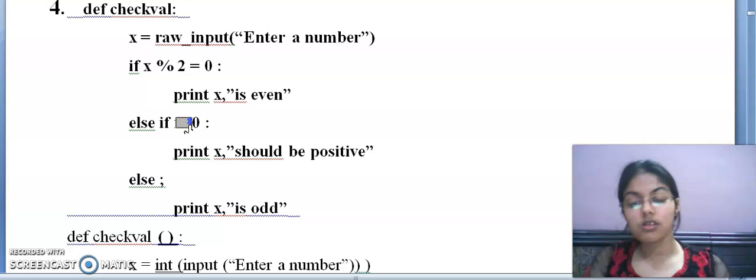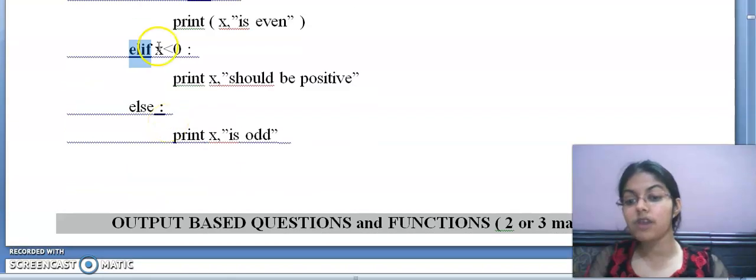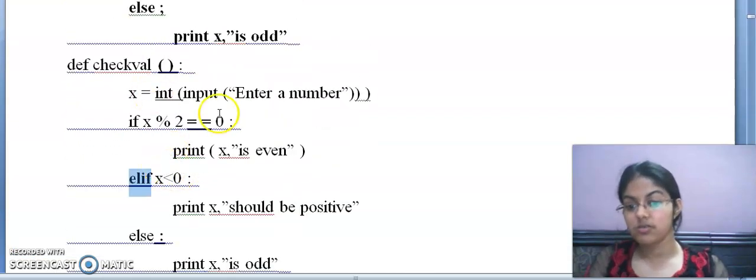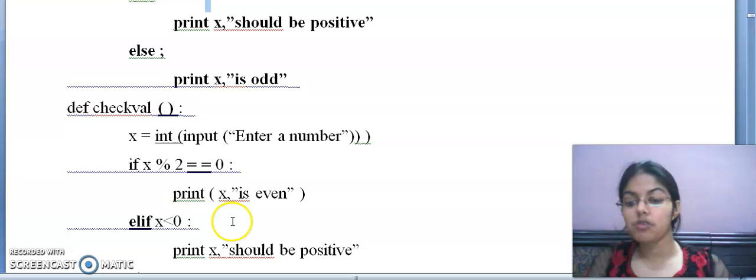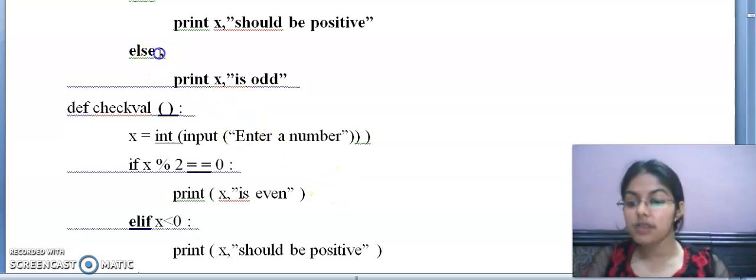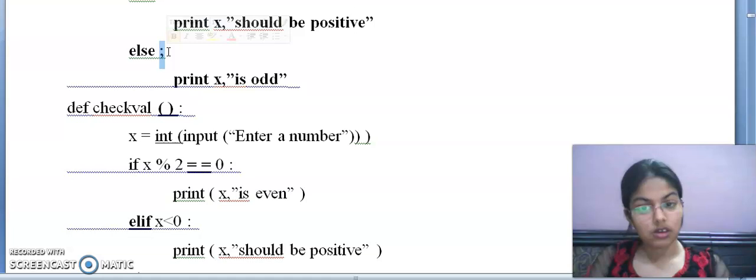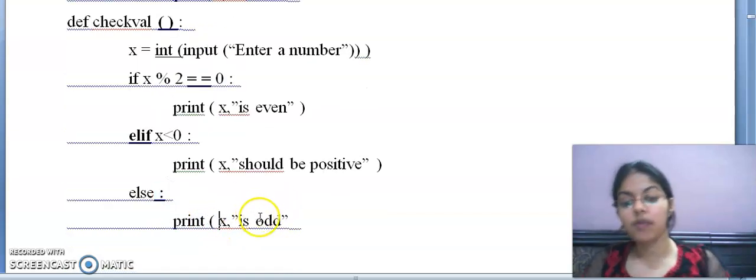Now see here, x modulus 2 equals to 0. If, f is small and it is correct. But for comparison you need double equals to. Next statement, print x is even. We are using Python 3 point above version, so I would prefer to use brackets here. Next, else if x is less than 0. Students, if you are familiar with other languages like C, C++, Java, dot net, there this syntax was correct. We had else if there. But in Python, else if is not used. We use elif. So else if will be replaced or corrected with this elif statement.